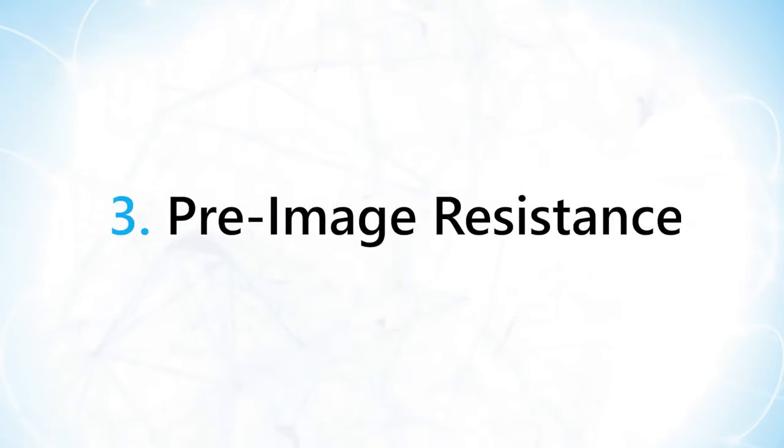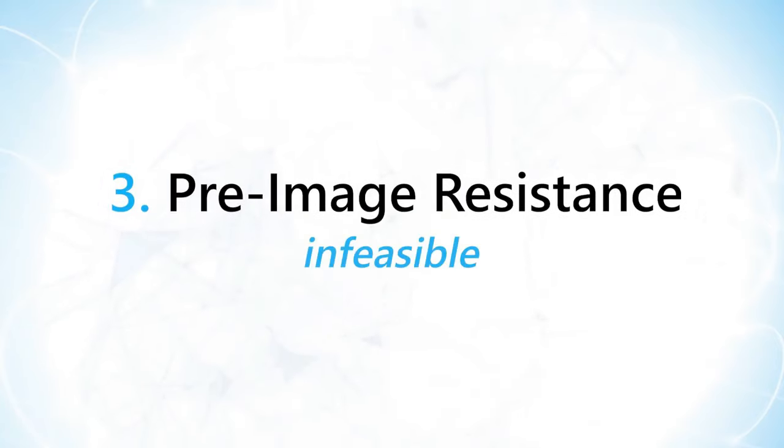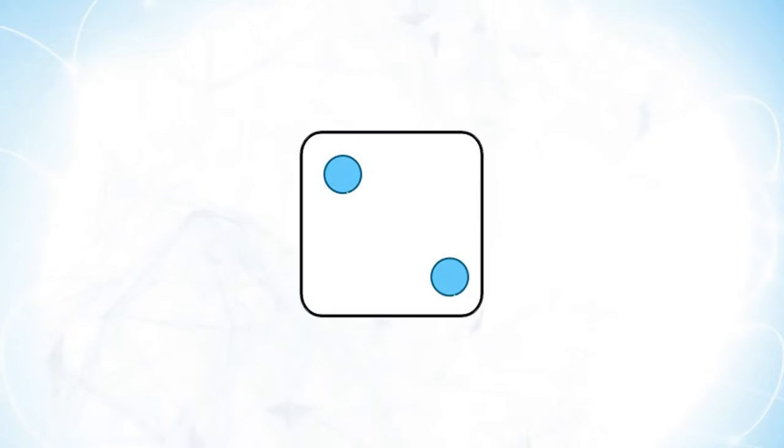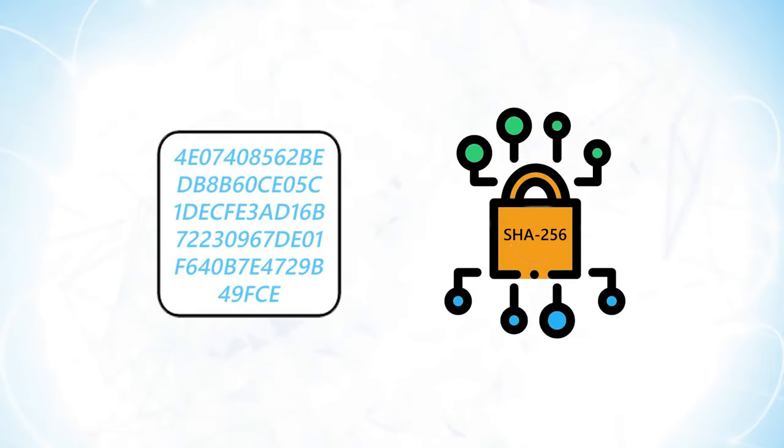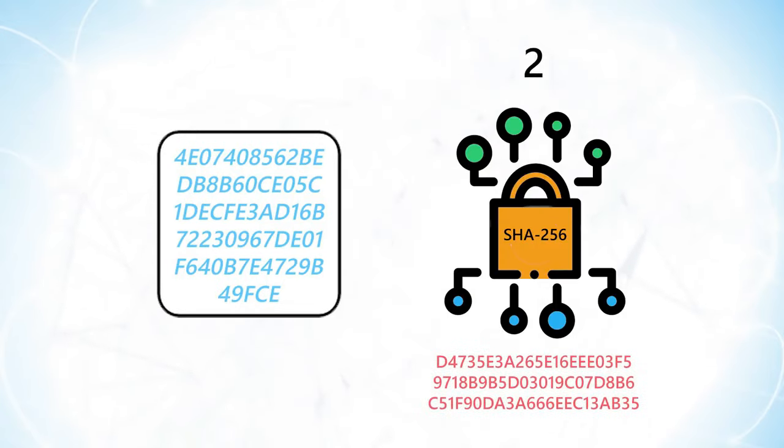Property 3: Pre-image resistance. Pre-image resistance states that it is infeasible to determine the input data based on the output hash. Notice the use of the word infeasible instead of impossible. For example, suppose you're rolling a die. Instead of getting a specific number between 1 and 6 when you roll, you instead get a hash value that corresponds to a specific number between 1 and 6. How will you be able to determine what the original number was?